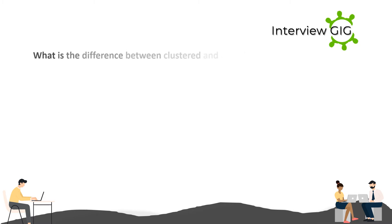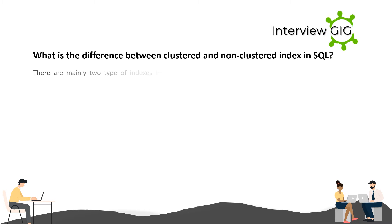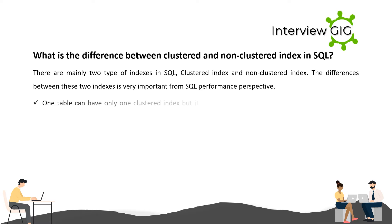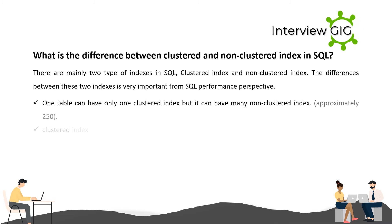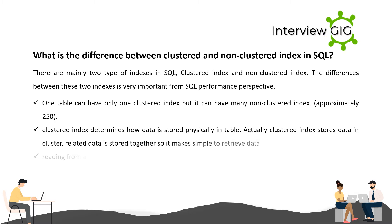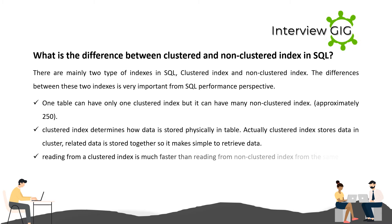What is the difference between clustered and non-clustered indexes in SQL? There are mainly two types of indexes: clustered index and non-clustered index. One table can have only one clustered index but can have many non-clustered indexes — approximately 250. Clustered index determines how data is stored physically in the table; it stores data in clusters so related data is stored together.